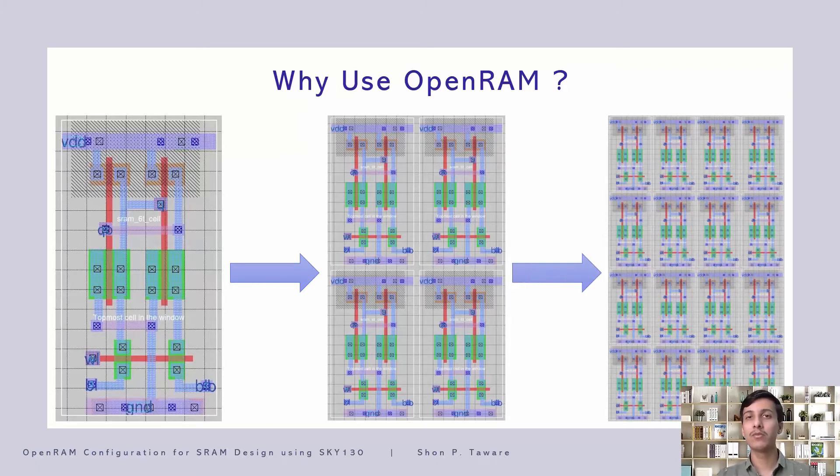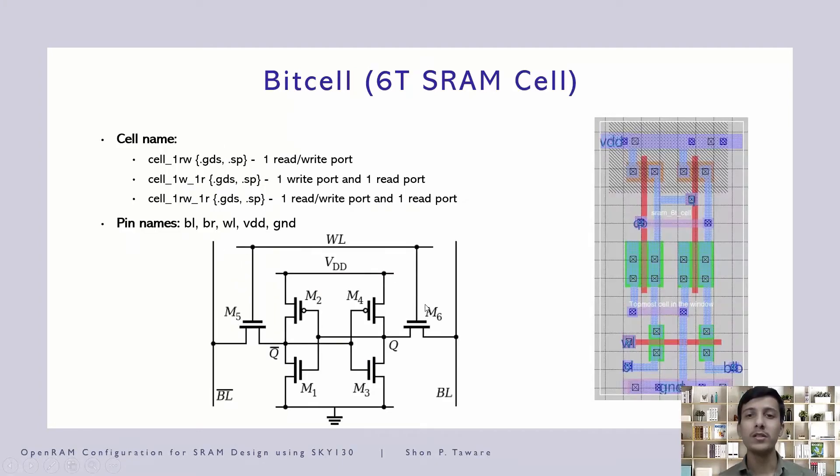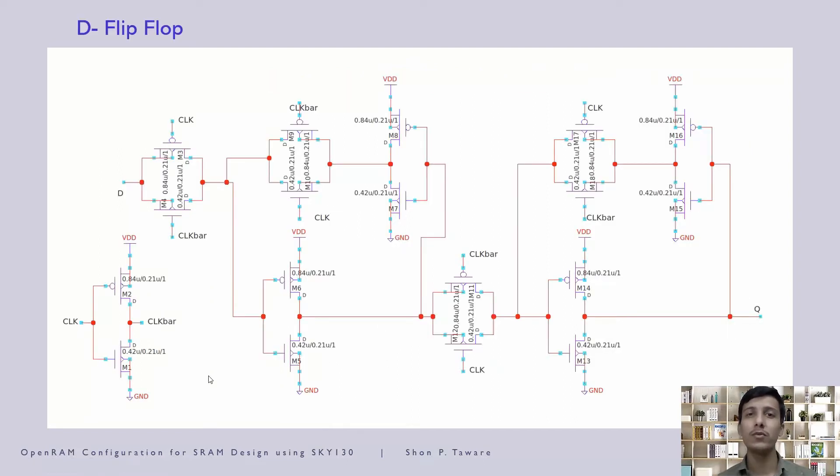we need to replicate the 1-bit SRAM cell for 16 times. It is designed by cross-coupling two CMOS inverters which hold the bit and two access transistors for enabling the access to the cross-coupled inverters. This circuit is a combination of two D-latches. The first one is a negative level sensitive latch and the second one is the positive level sensitive latch.